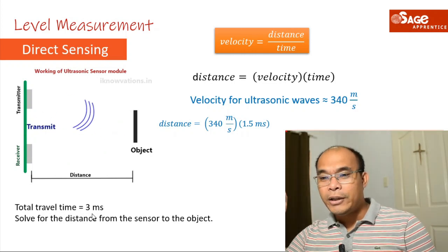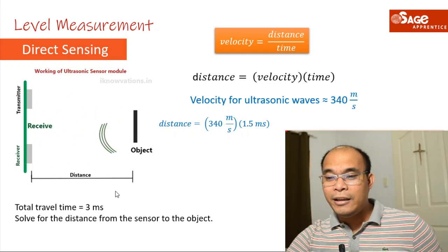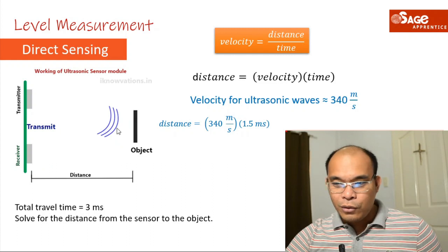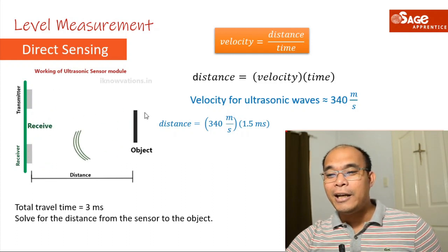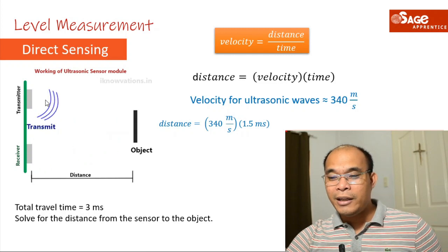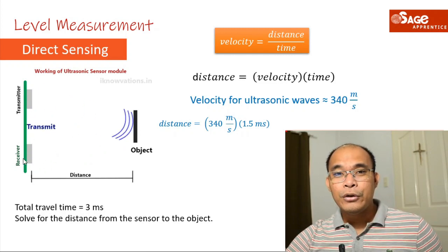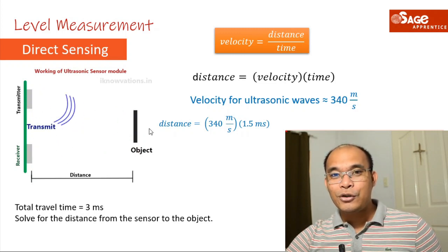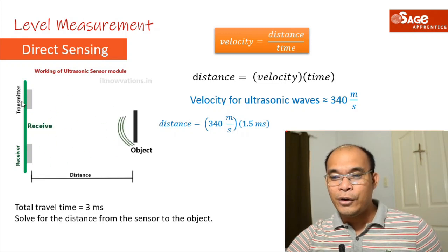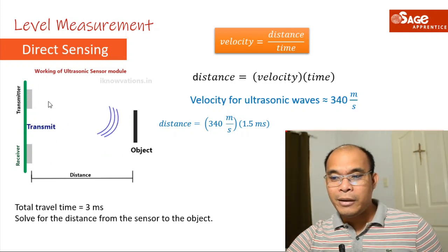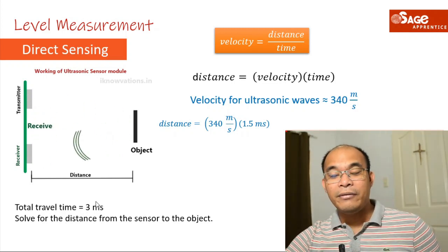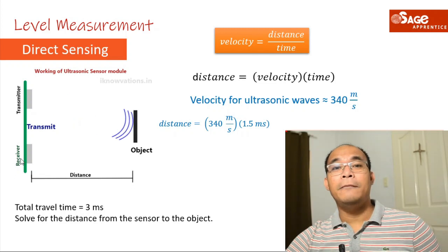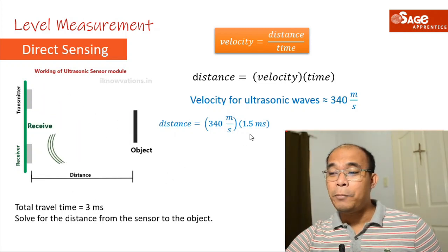We substitute: distance = 340 m/s × 1.5 milliseconds. Note: we use 1.5 milliseconds, not 3 milliseconds, because the 3 milliseconds is the total round-trip travel time — from transmitter to object AND back to receiver. We only want the one-way distance from transmitter to object, so we divide by 2: 3 ÷ 2 = 1.5 milliseconds.